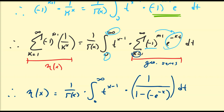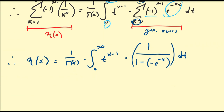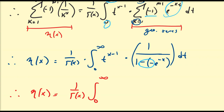Since the sum starts from k equals 1, t is constant with respect to the summation. We have a negative times a negative giving a positive, so the eta function of x equals (1/Γ(x)) times the integral from 0 to infinity of t^(x−1) times e^(−t) divided by (1 plus e^(−t)) dt — with the common ratio term in the numerator included.